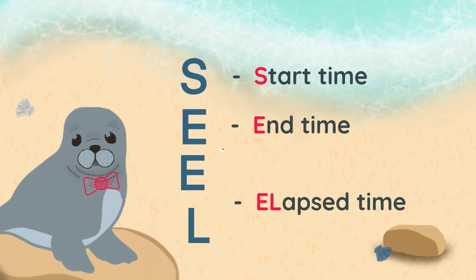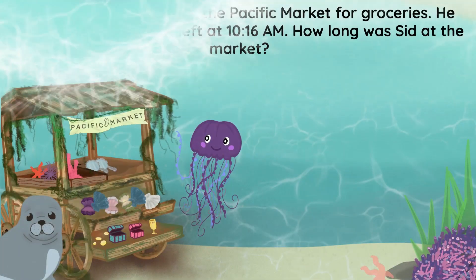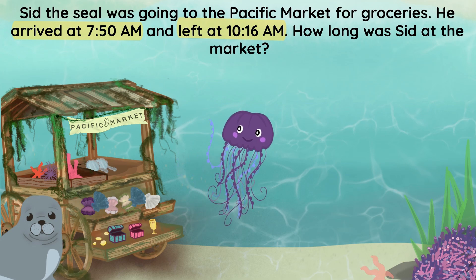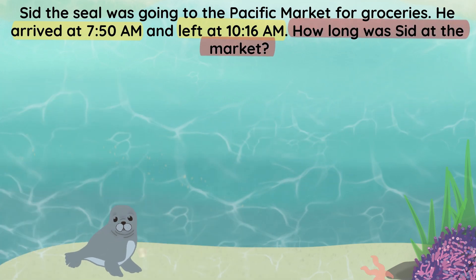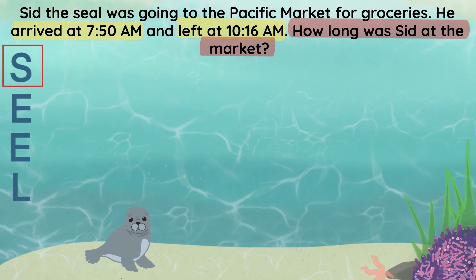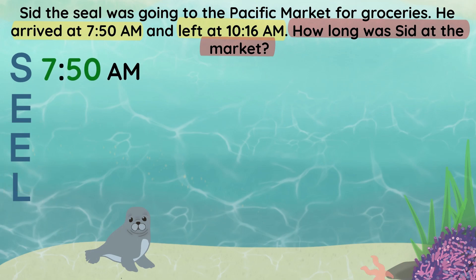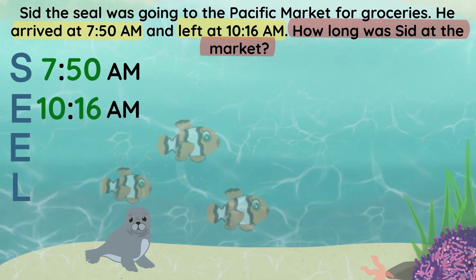To solve problems involving elapsed time, we must have all of this information. Let's try a few elapsed time problems together. Sid the SEAL was going to the Pacific market for groceries. He arrived at 7:50 AM and left at 10:16 AM. How long was Sid at the market? According to the acronym SEAL, we need to identify the start time, end time, and elapsed time. In this problem, Sid starts shopping at 7:50 and leaves at 10:16.